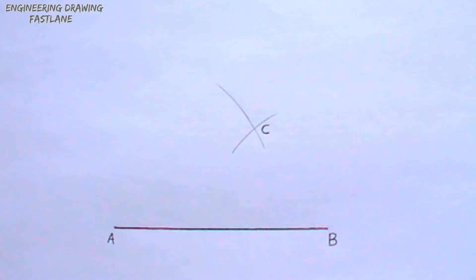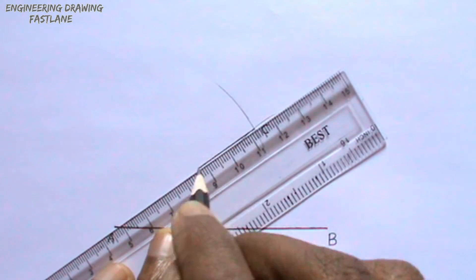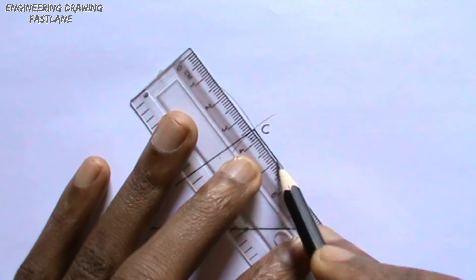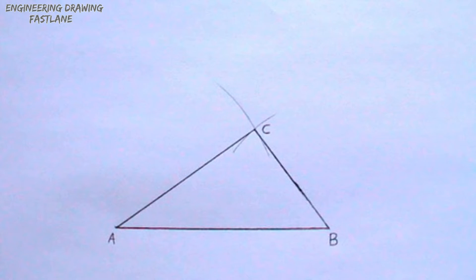Draw a line to join point A and C, and another line to join point B and point C. The triangle has been drawn successfully.